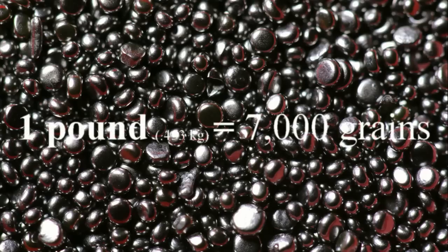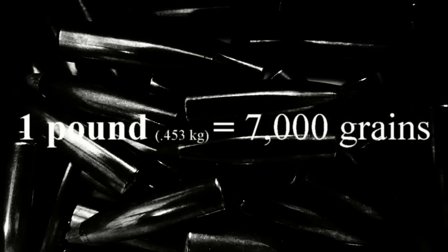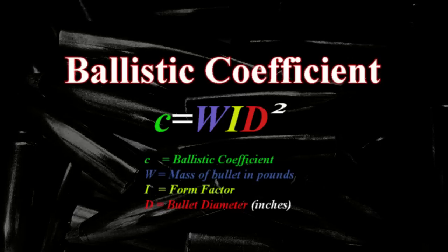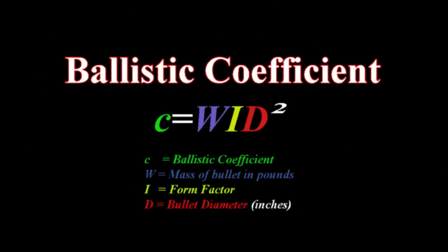You take that mass and multiply it by the form factor. The form factor is basically determined from a test projectile of the same shape — we'll get into test projectiles in a minute. Then you take that times the bullet diameter in inches. If you have a 7-millimeter bullet, that's .284 caliber, so .284 inches. The only thing in this formula that's a little confusing is the form factor, represented by I in the formula.